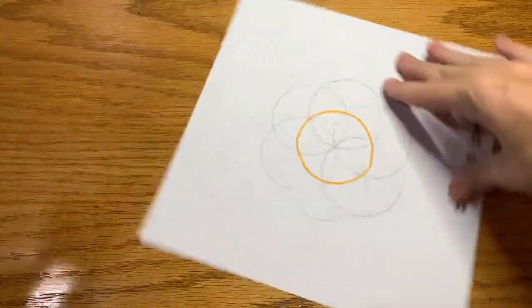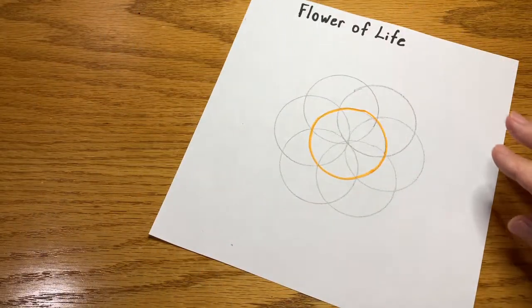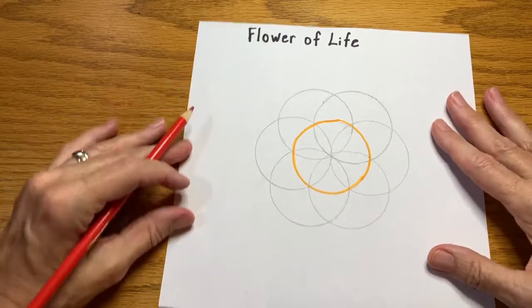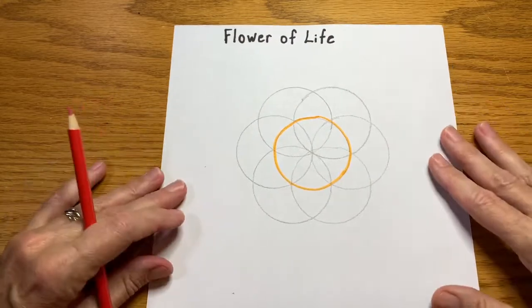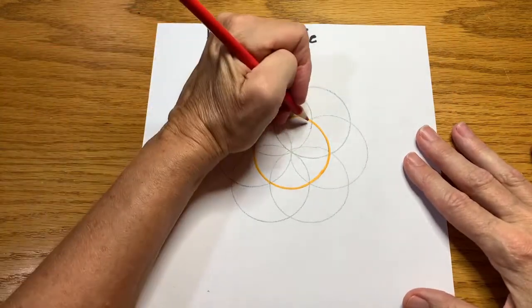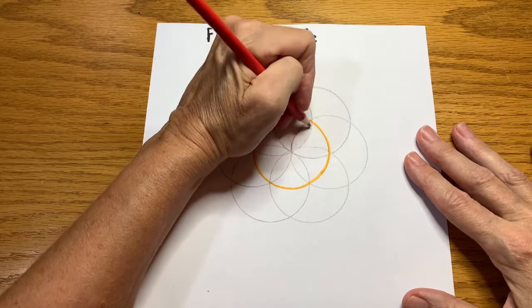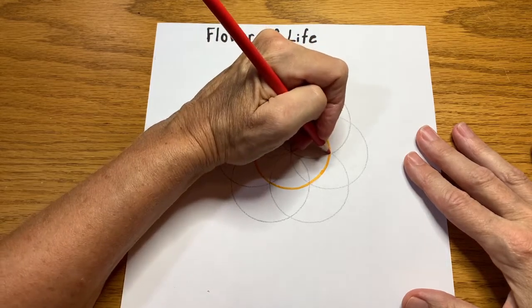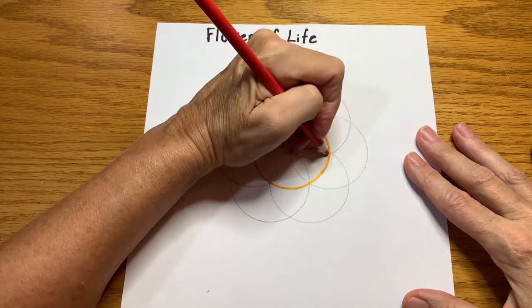So this is one iteration and you can see that I have these petals here that make up my first flower.